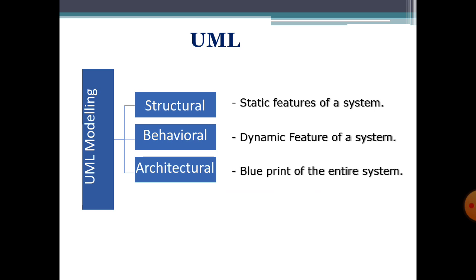The UML architectural aspect is basically composed of both structural aspect as well as behavioral aspect, which together we call the blueprint of the entire system. This architectural model of a software system is a combination of the structural aspect and the behavioral aspect — both the static view and the dynamic view — which together discuss the software system model.